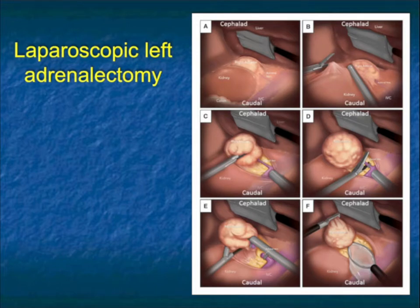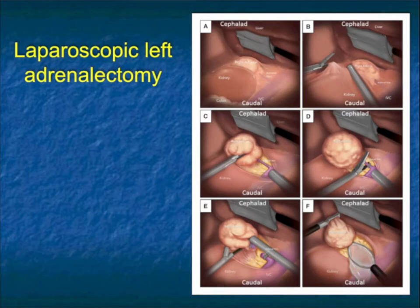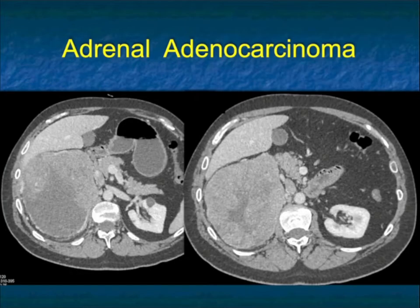You may not be positive of the pathology, but you know it's malignant. If you think adrenal cortical carcinoma, do not do a biopsy — you'd go through the capsule, you'll seed the patient's peritoneum, and the outcome will be terrible.